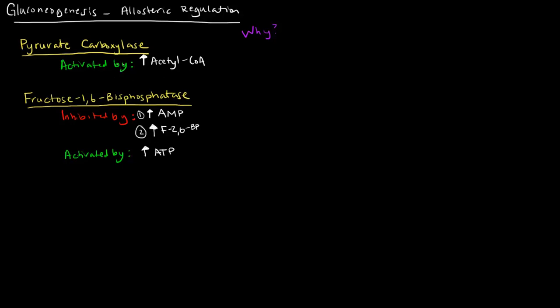The allosteric activator of pyruvate carboxylase is acetyl-CoA. So high levels of acetyl-CoA activate pyruvate carboxylase. We haven't talked too much about acetyl-CoA just yet, but it's actually created from pyruvate when there's oxygen available so that acetyl-CoA can go on to the TCA cycle and later the electron transport chain.